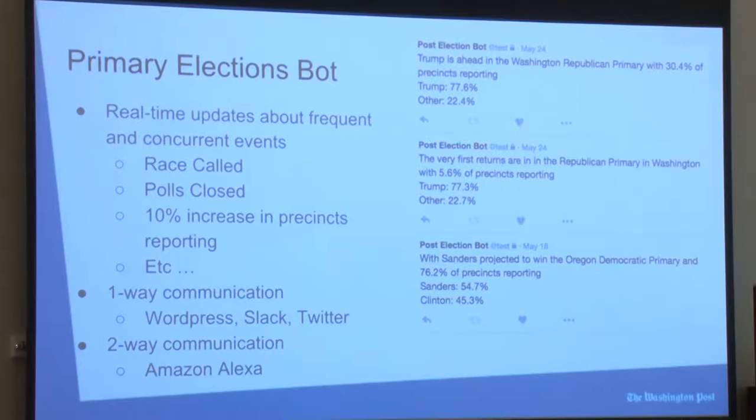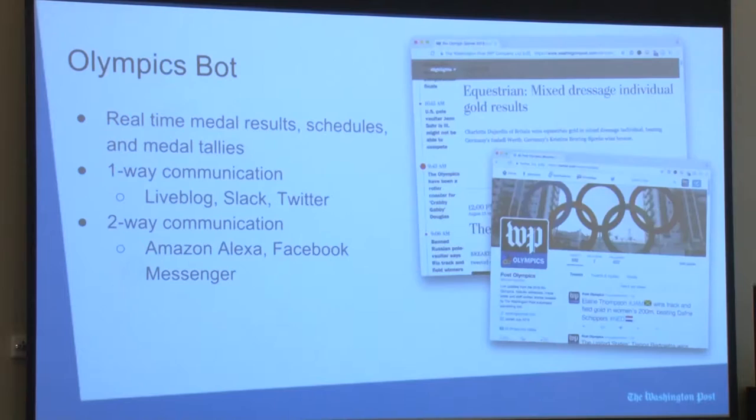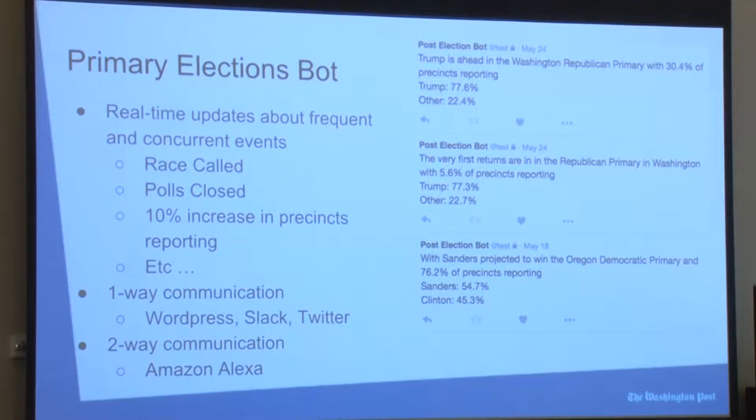Depending on the medium, we changed the output we produced. For example, on Twitter, as various events occurred throughout the race, we simply tweeted them out. On WordPress, we created a single living story and updated its contents over time. Similarly, on Alexa, we used the lead of our living story to tell what's going on in a race at the moment that a person asks.